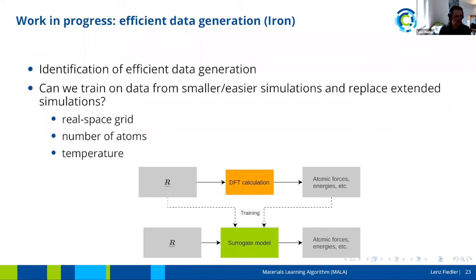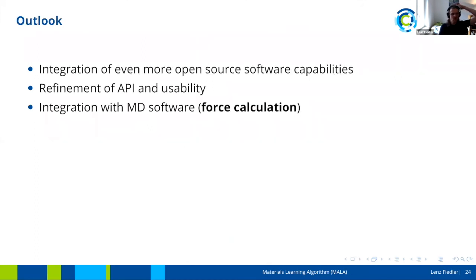Another interesting question is regarding temperature: DFT calculations have to be done at a specified temperature, and the question is whether it is possible to train a model at a certain temperature and then use it with some level of success for other temperatures as well, in order to avoid having to train a new model for each new temperature of interest.